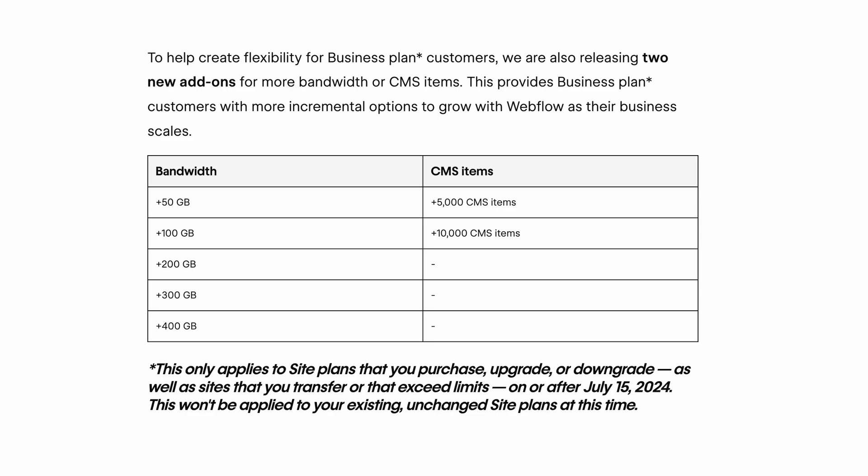Editing note: I missed this in my initial reading of the article — they do offer incremental updates to the business bandwidth. So if you need a little bit more, they provide bolt-ons. For the 50 gig and 100 gig bolt-ons they also offer an increase in CMS limits, which is nice. They are also releasing two new add-ons for more bandwidth, though I'm not sure if prior tiers were already available.